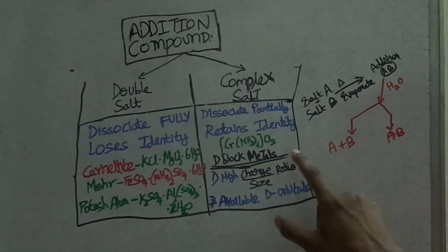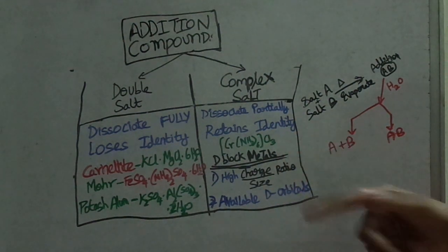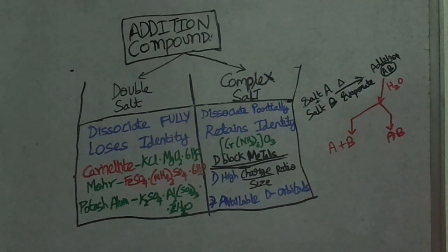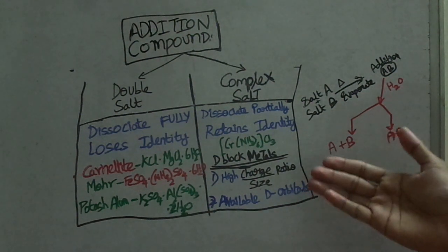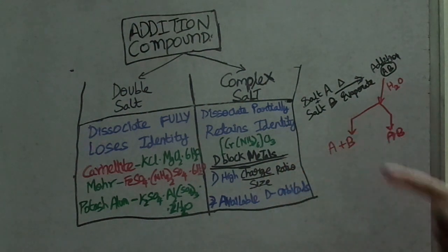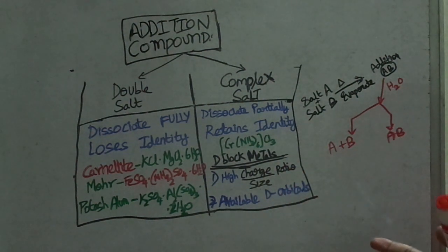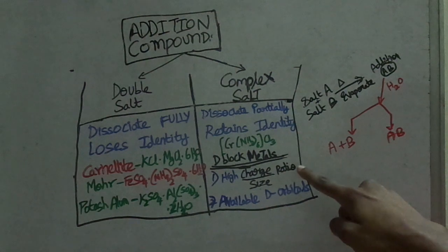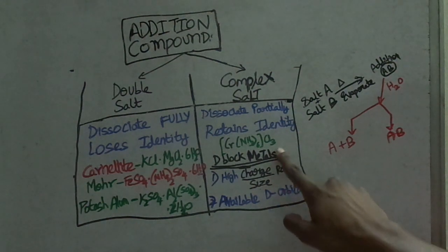For D-block elements, there are special abilities that make them form complex salts. So what is the difference between D-block metals and others? D-block metals have unique properties that allow complex salt formation.